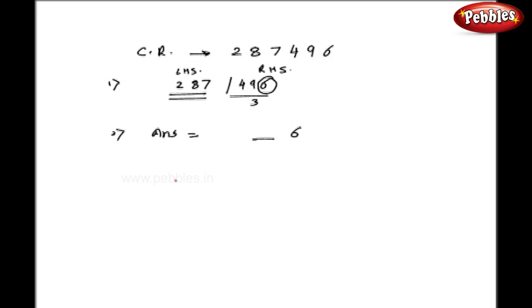Now let us find out the second part. As you can see, figure 287 lies between the perfect cubes, that is 6 cube and 7 cube. 6 cube is 216 and 7 cube is 343. You have to select the smaller number always, that is 6 here. Remember, always select smaller number while finding out the cube roots. So my answer is 66.